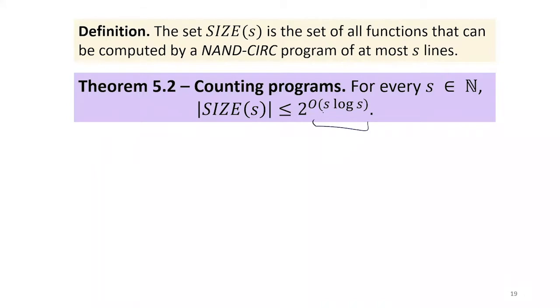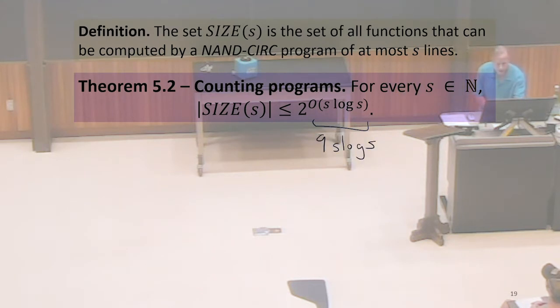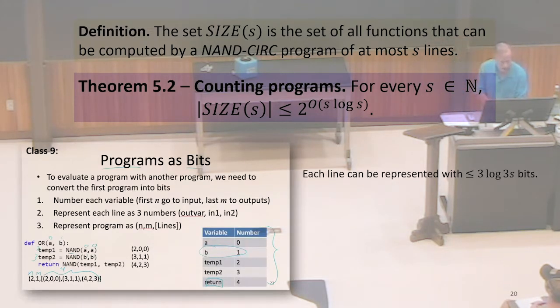Now that we've said what this theorem actually means, there exists some function in that set, and we can pick some constant, let's pick 9 because 10 is too hard to write. And if you remember, we can represent these programs, each line in a NAND-CIRC program.